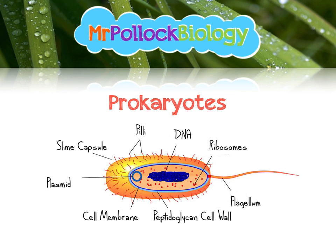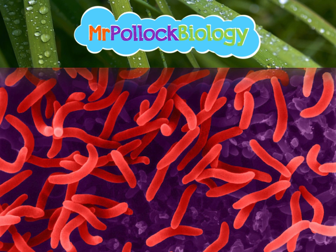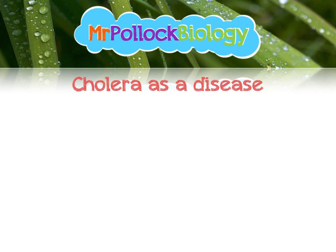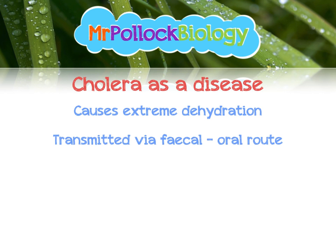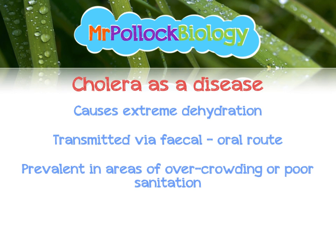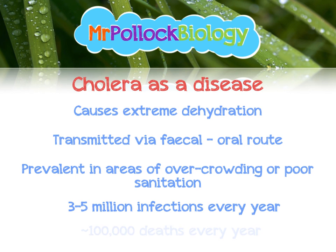So that's the general structure of a prokaryote. The organism we're interested in is Vibrio cholerae — the bacterium that causes cholera. As a disease, cholera is quite nasty. It causes extreme dehydration and is transmitted via the fecal-oral route, meaning ingestion of human waste. It is prevalent in areas of overcrowding or poor sanitation. Between 3 and 5 million people are infected with cholera every single year, resulting in around 100,000 deaths per year.